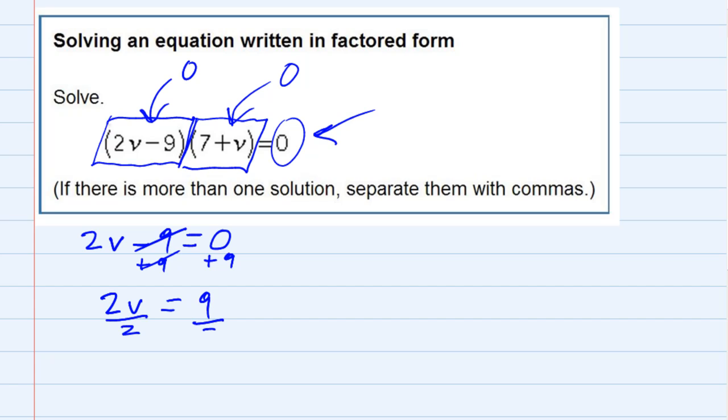And then to get the v by itself, I would divide by 2 to get rid of the 2, and I would have v equals 9 halves, or let's just say 4.5.